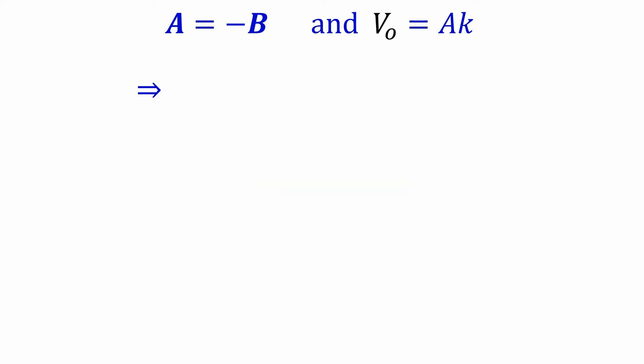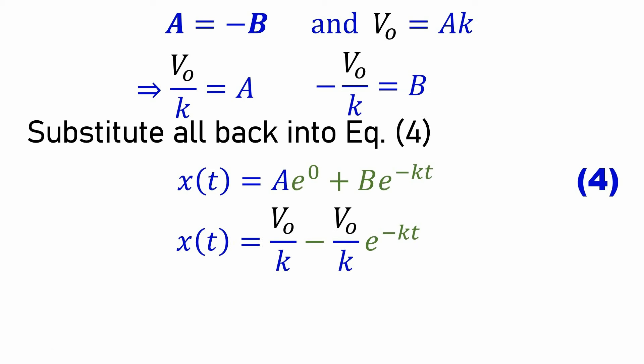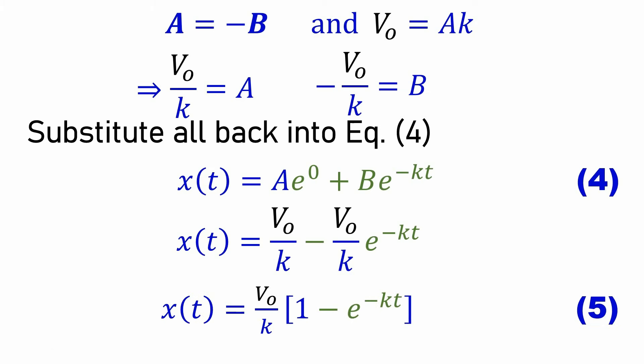We now have A = v₀/k and B = −v₀/k. Substituting back into equation 4: x(t) = (v₀/k)·e^(0) + (−v₀/k)·e^(−kt). Factorizing, we obtain x(t) = (v₀/k)(1 − e^(−kt)). This expression appears in our lecture notes and will help us understand the motion of an object thrown horizontally experiencing air resistance.